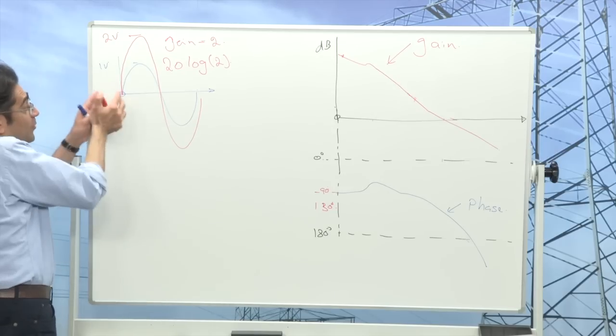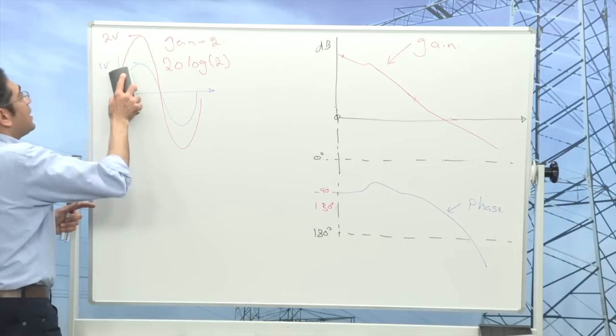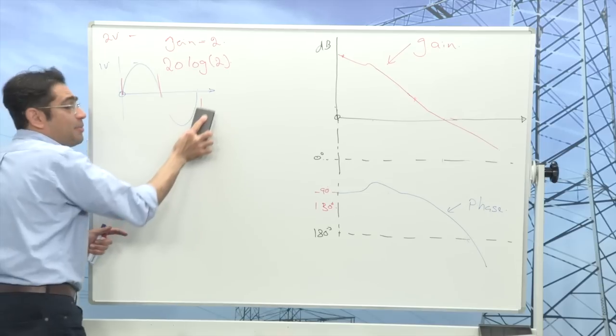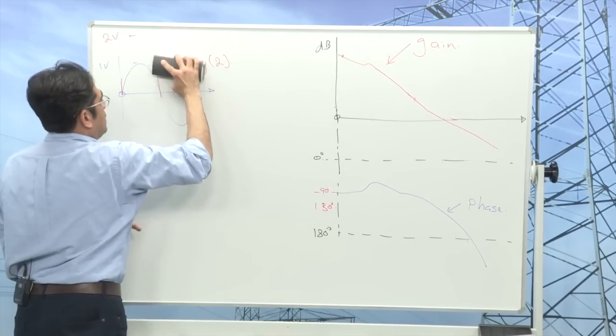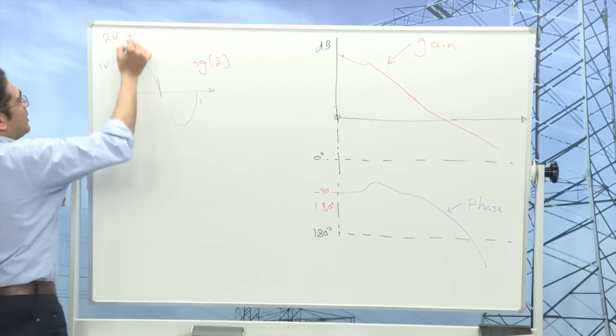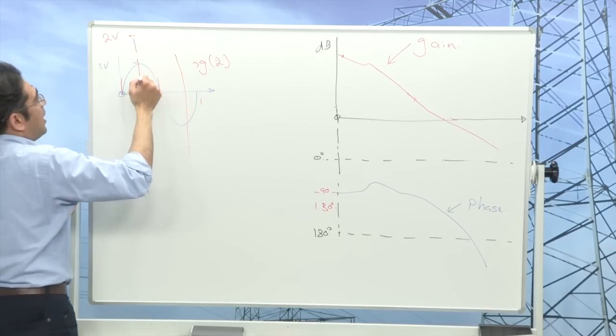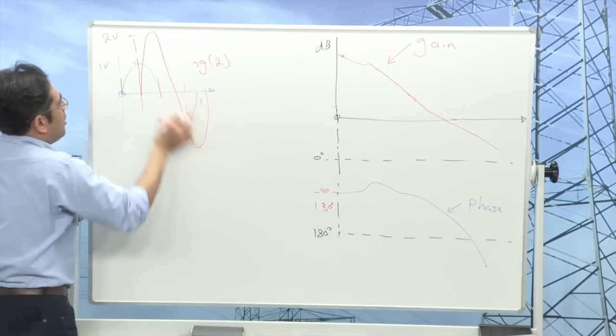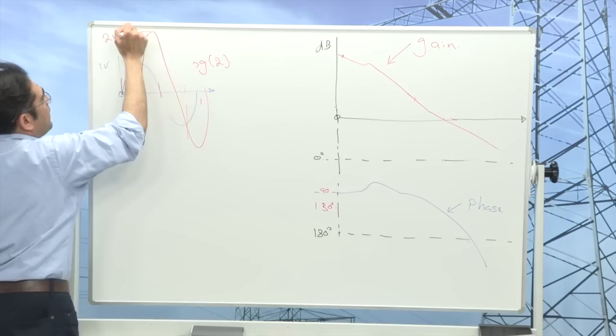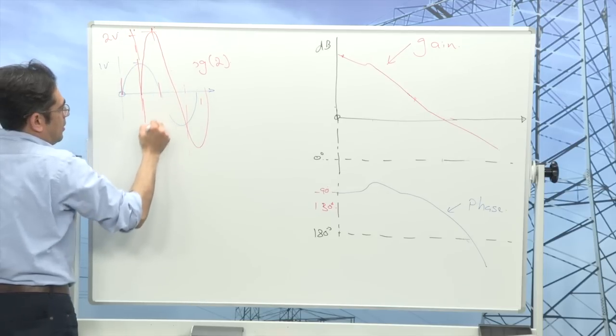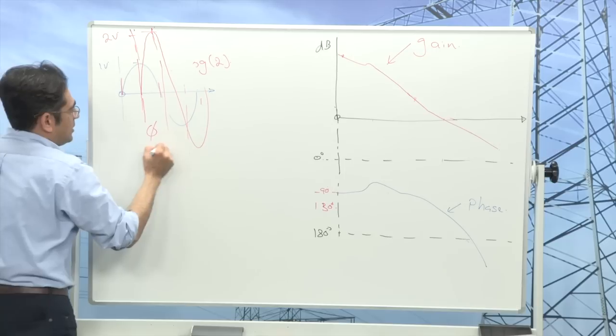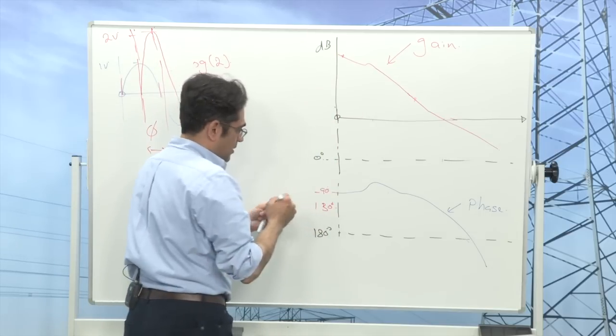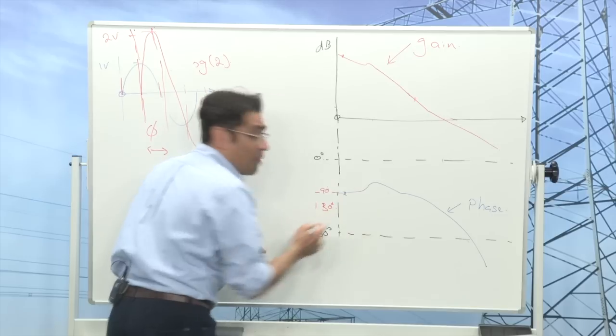And of course in dB world that would be 20 log of 2, and I can plot that on my gain plot at 10 Hertz, a point over here, and that will be the first point of my Bode plot. Then many times when you inject the sine wave, by the time that it comes out, not only it has changed in size but there is also a phase shift.